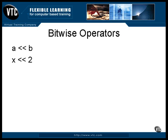When the bits are shifted, any bits shifted off on the left are lost and zeros are inserted on the right. This example shows the before and after of shifting a byte two positions to the left.